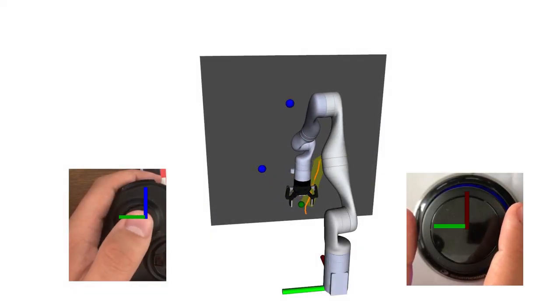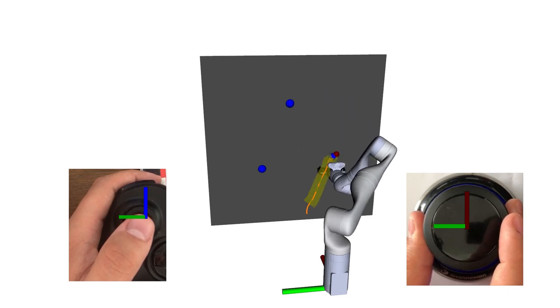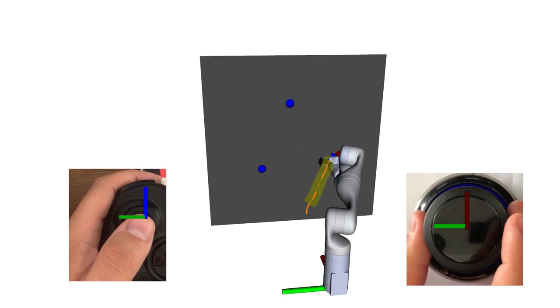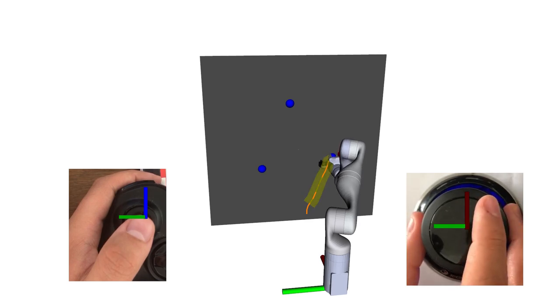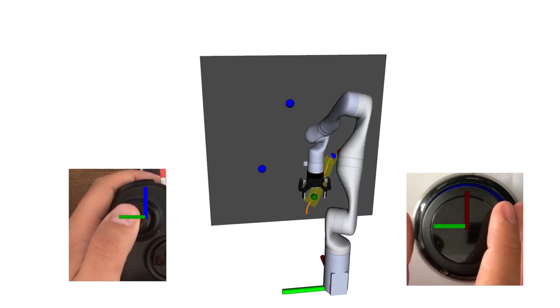Now imagine that a thirsty operator wants to grab a drink from the fridge. The commercial vision system detects a beer, a juice, and a milk, and provides a picking pose for each. Obviously, the operator decides to go for the delicious beer and indicates it by means of the human-machine interface. In this case, for demonstration purposes, the joystick.